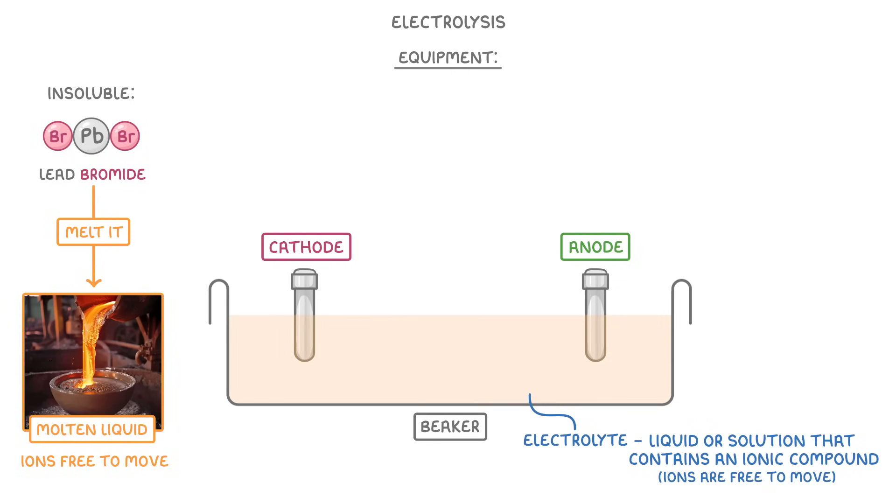Then lastly we need to join the electrodes with some wire, so that the electrons can flow between them, and add some kind of power supply like a battery to drive that flow of electrons.